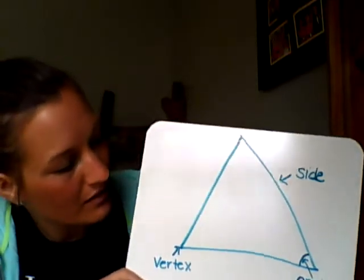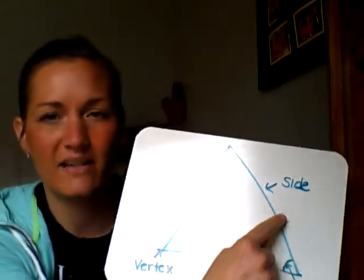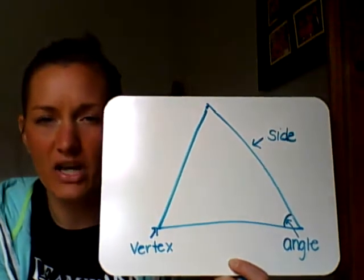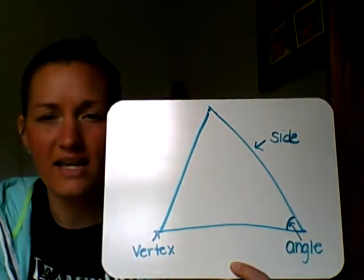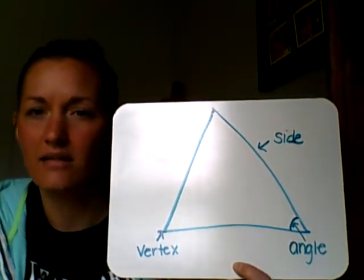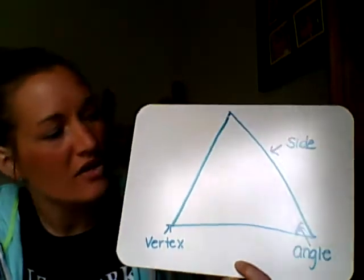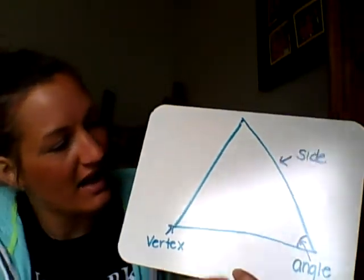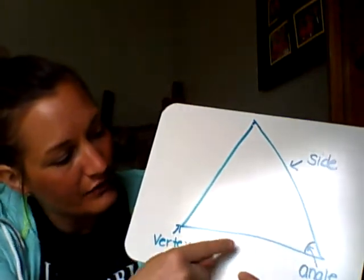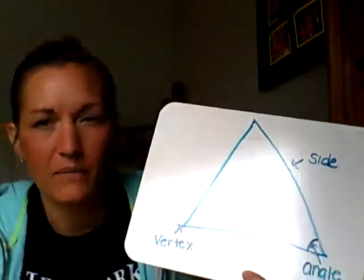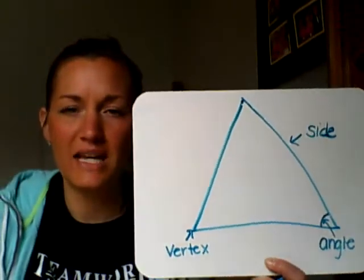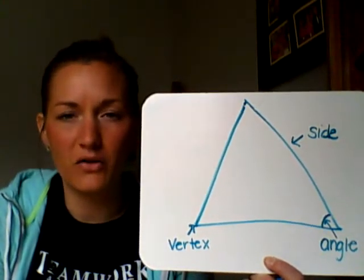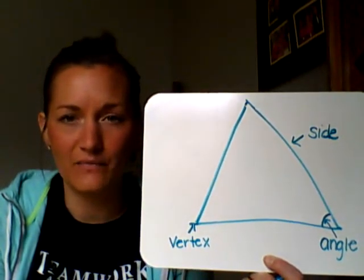Now the next word we had on here was a side. A side — every shape has sides. A side is also called a line segment. So if we look, a triangle has how many sides? One, two, three. So it has three sides, three angles, and three vertices for a triangle.